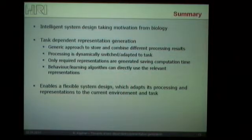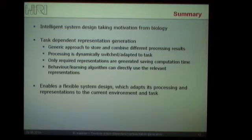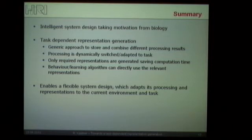So with this, I am already at the end of my presentation. I showed you an intelligent system design which took its motivation from biology. The task-dependent representation generation is a generic approach to combine different processing results with different layers. You can therefore dynamically switch or adapt the processing dependent on the current task, and save computational time because you only compute the combinations which are necessary. For higher-level applications you can use these outputs as a generic feature for learning or behavioral algorithms. I hope I showed a flexible system design which can adapt its processing and representations based on the current task and environment. Thank you.